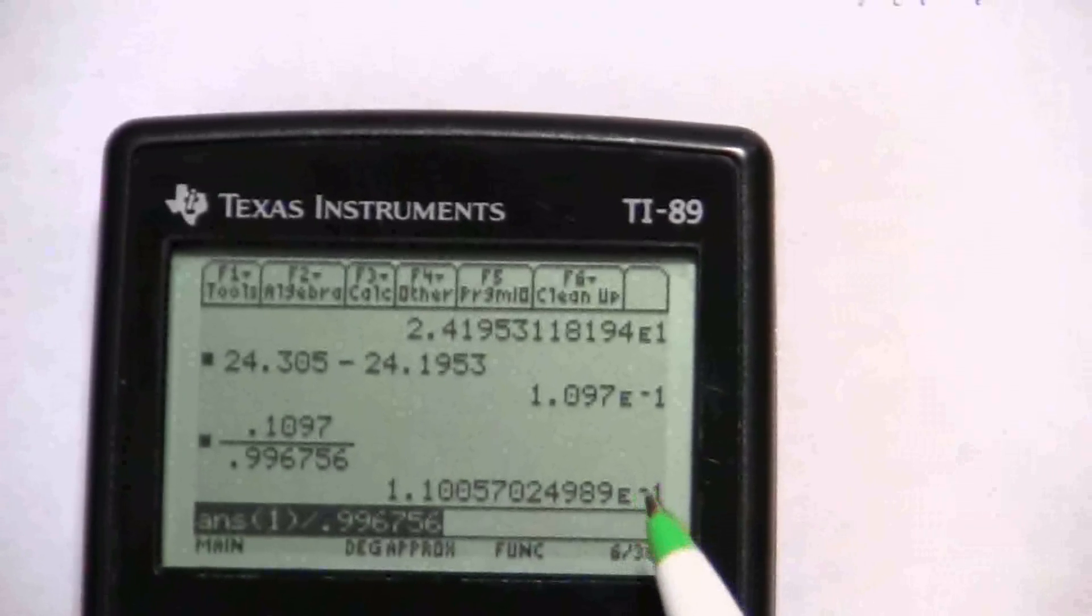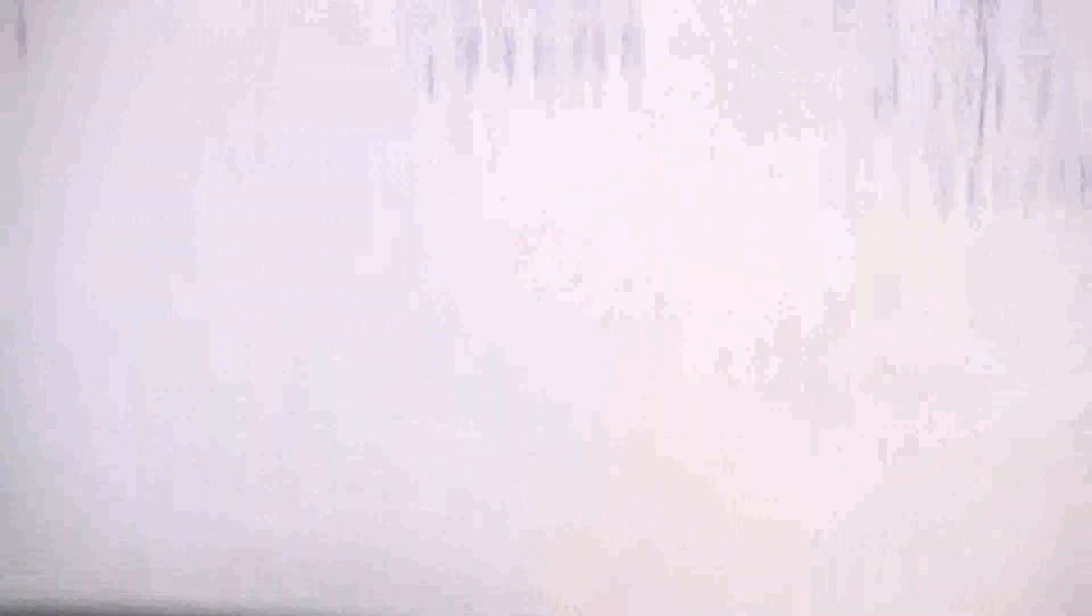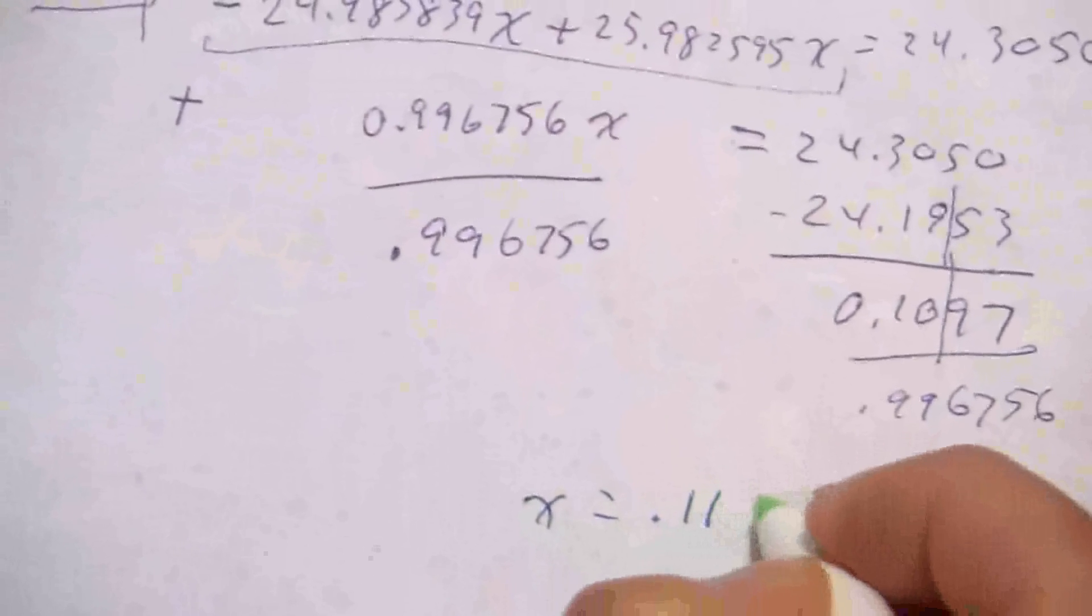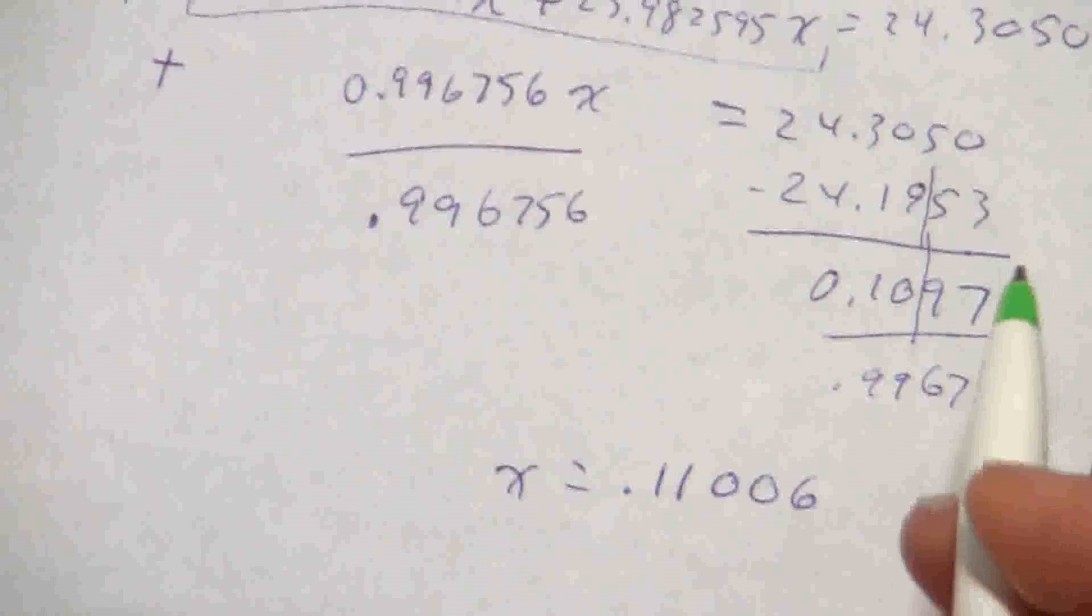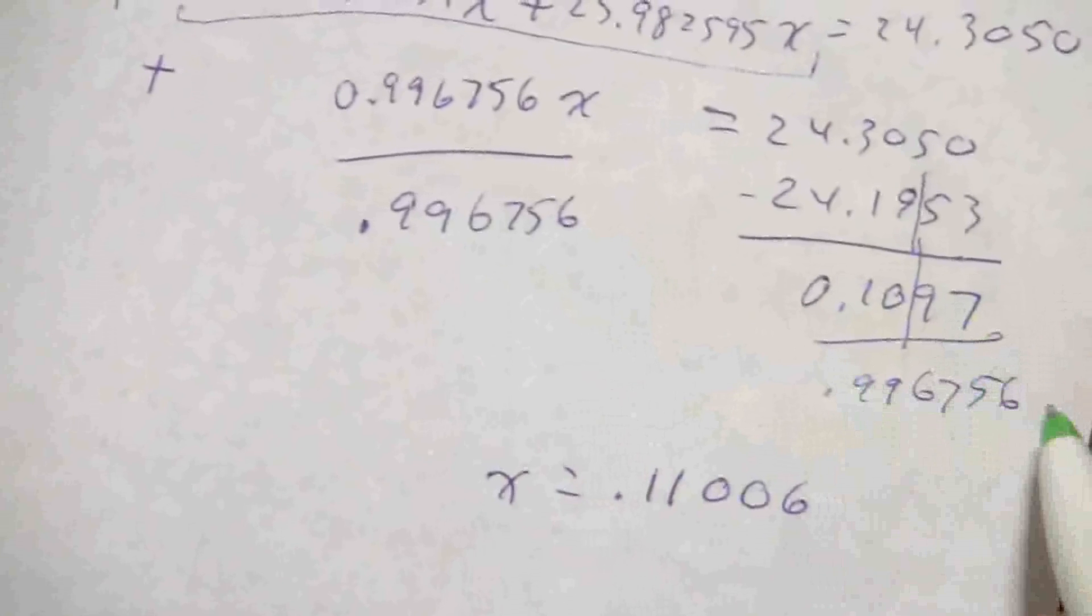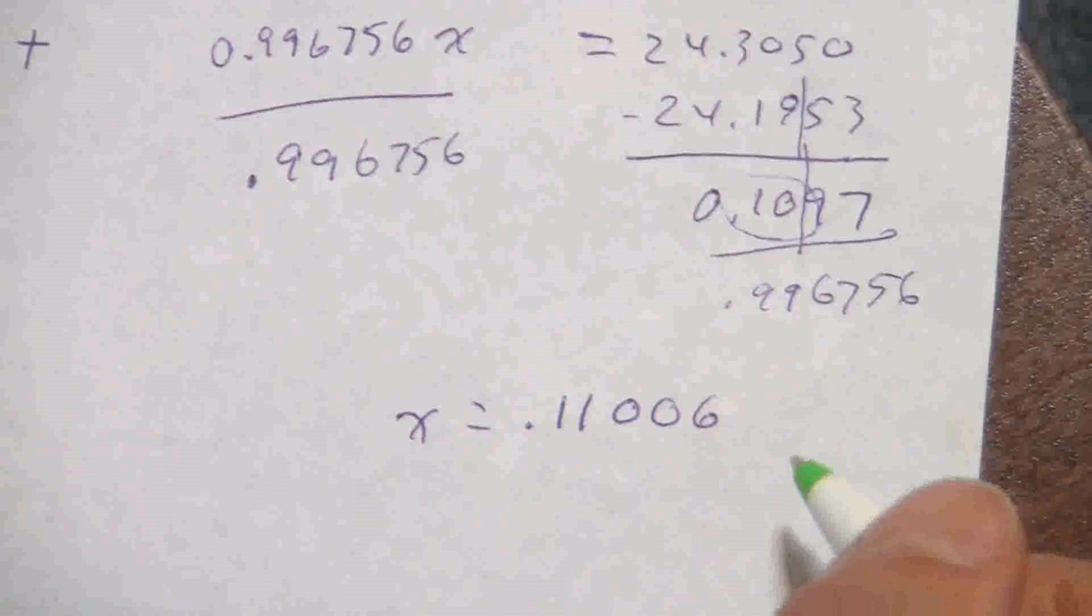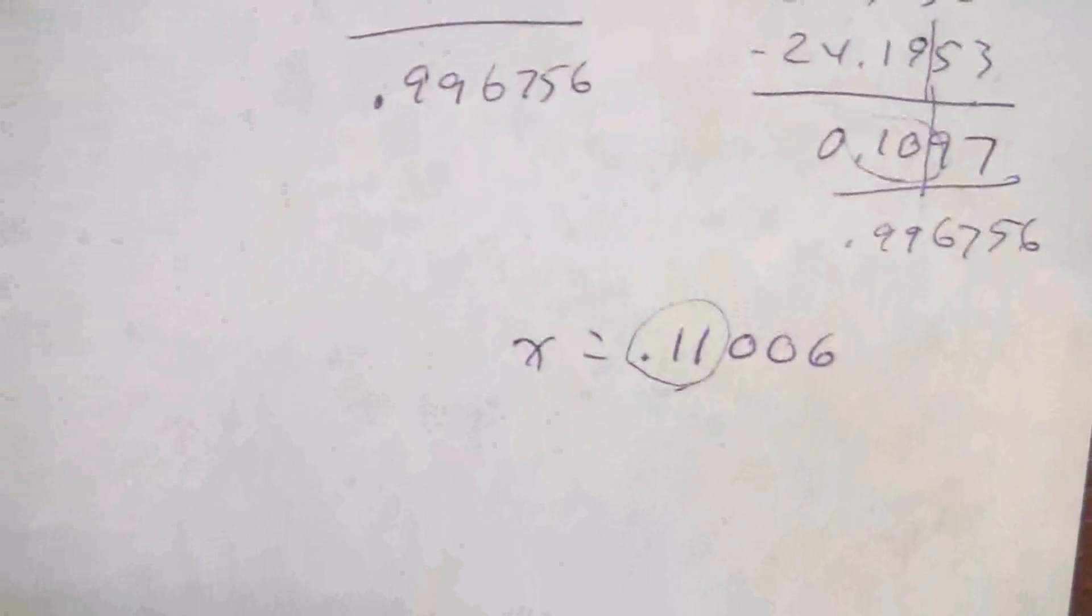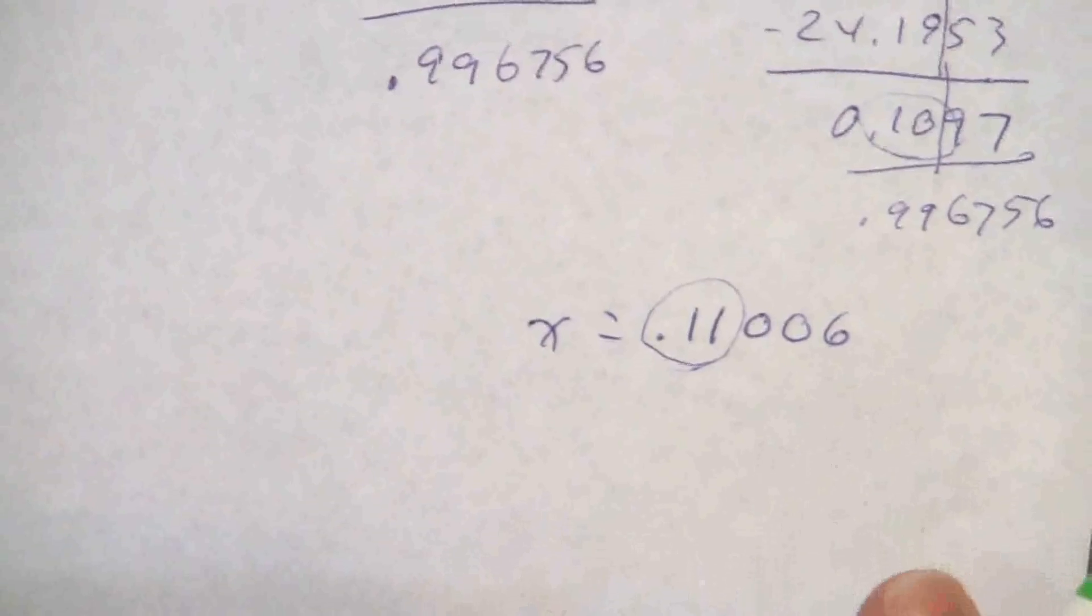So I get times 10 to the minus 1, so 0.11006. So x equals 0.11006. How many significant figures? Well, I have a bunch of them here that I'm dividing by, but I only have two there, so really I can only say to two decimal places what that value for x is.